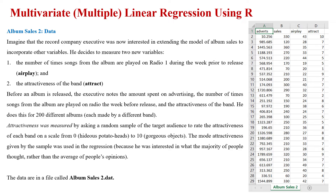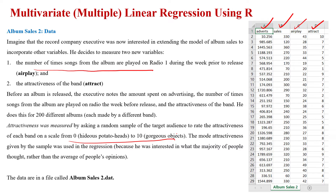I'm going to take the same example we discussed for the multiple linear regression model, in which sales is the dependent variable, whereas advertisement expenditure is an independent variable. Another independent variable is airplay, and another is attractiveness. This is basically the budget amount we are spending on advertisement. Airplay means the number of times songs from an album are played on Radio 1. Attractiveness is ranked from zero to ten, where ten means the song is very good.